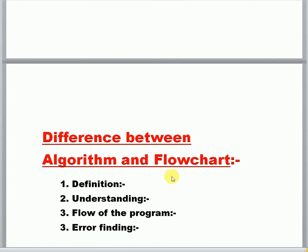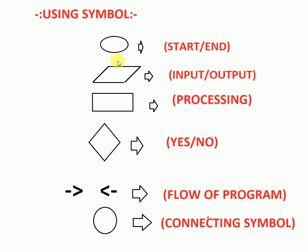Now, the difference between algorithm and flowchart — I will discuss that a little later. First, let me discuss the symbols used. Here is a symbol used for start and end. When you are going to write a flowchart for any program, this symbol will be used when you start and when you end. And when you take any input or when output exists, a different symbol is used for that.